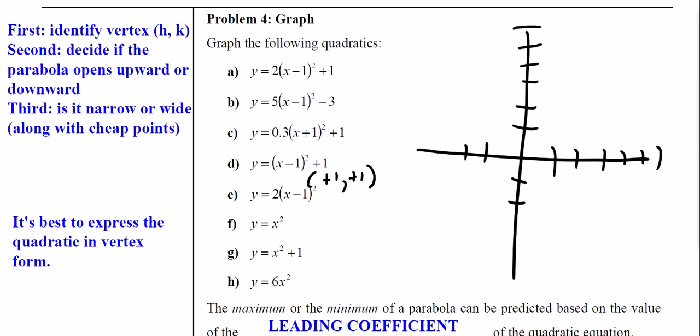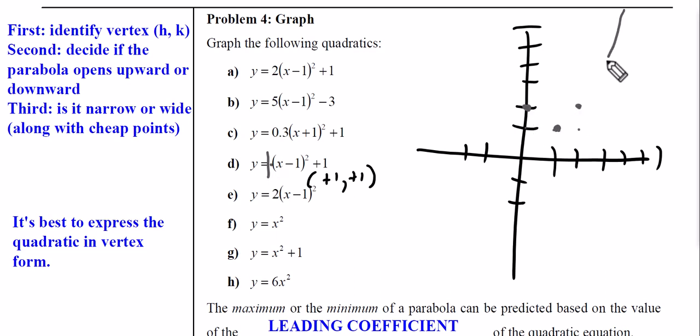For Part D, the vertex is (1, 1) — we put it right there. The a value is 1. Please don't say zero, because from problem three you know that if a is zero we don't have a parabola. So I go one over to the right and one up, one over to the left and one up, connect those points — it opens upward. This method is probably faster than Desmos because if you make an error it just doesn't work.